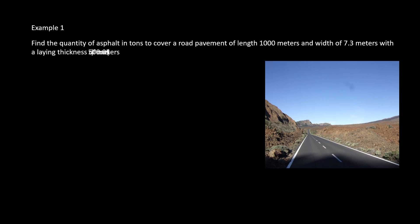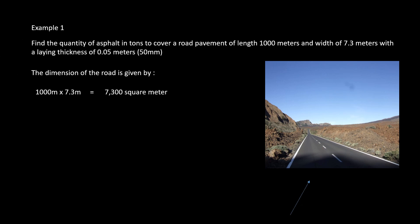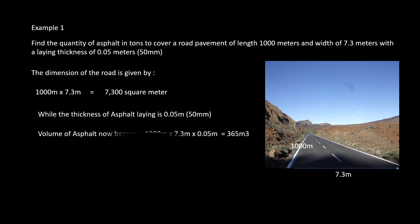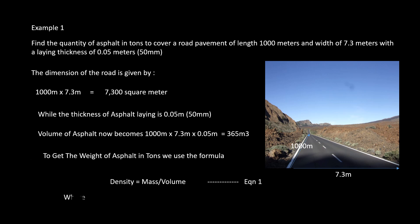Example one: to find the quantity in tons of asphalt that will cover a road of 1000 meter length by 7.3 meter width with an asphalt thickness of 50 millimeters. The area of the road is 1000 by 7.3, which equals 7300 square meters. With a thickness of 50 millimeters, the volume of asphalt becomes 365 cubic meters.